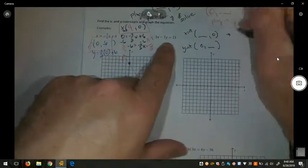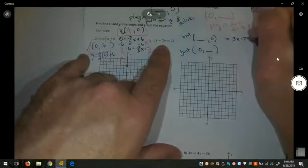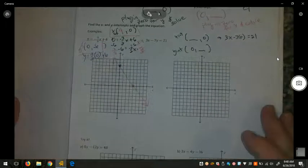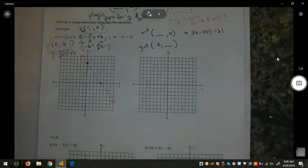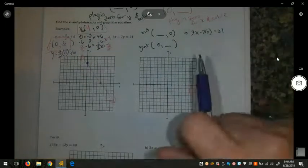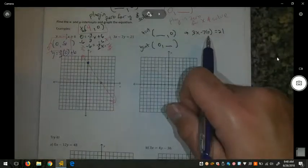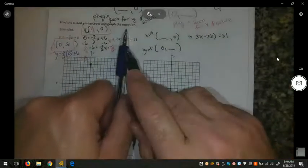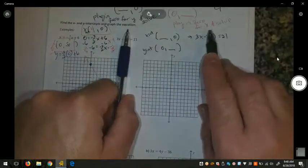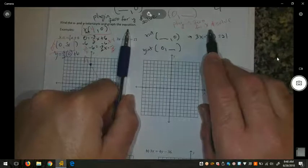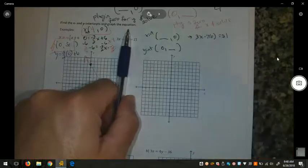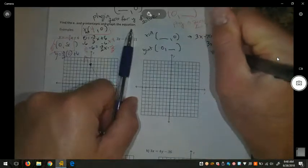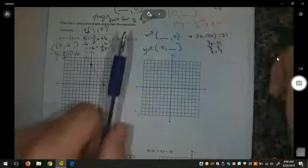To find the x-intercept, I'm going to plug in 0 for y: 3x minus 7 times 0 equals 21. Now, some teachers and students use a method called cover-up method when it's in standard form, because when you plug in 0 for y, negative 7 times 0 is 0. So you could just cover up the y-variable and its coefficient and solve the remaining equation. So, we actually have 3x equals 21. If I divide both sides by 3, x equals 7.